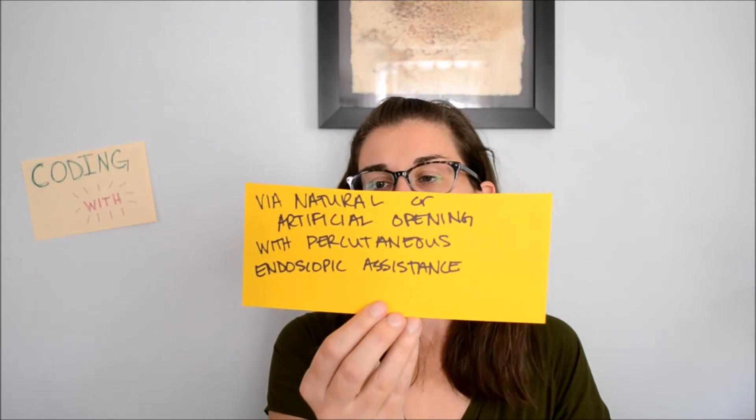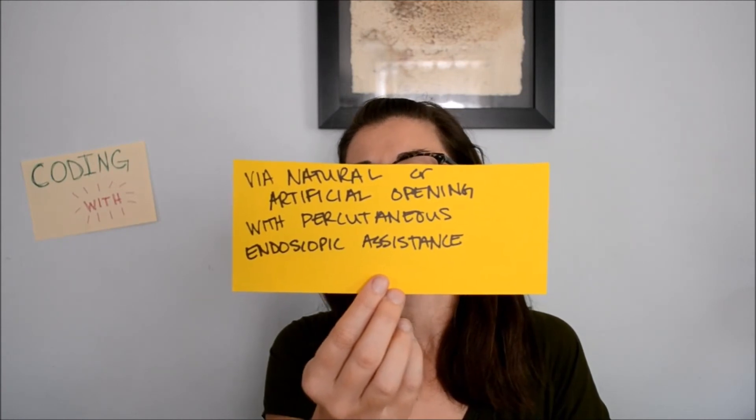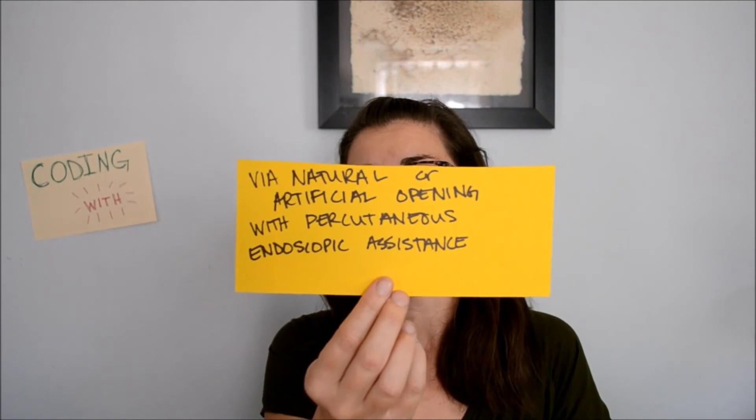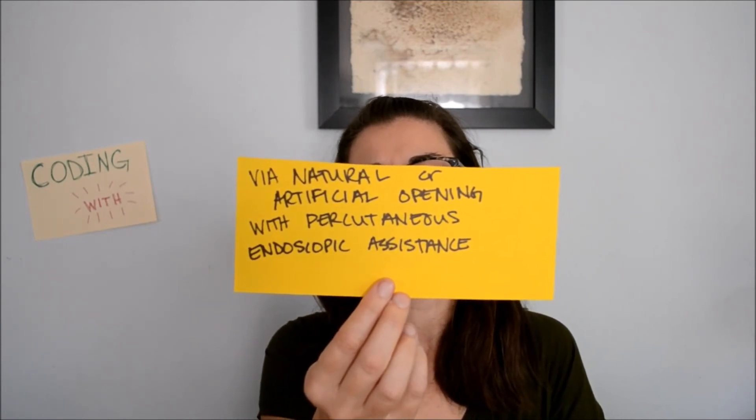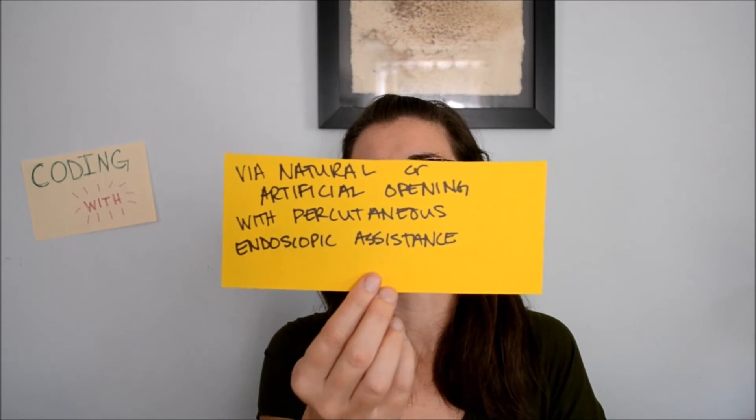And then we have via natural or artificial opening with percutaneous endoscopic assistance — entry of instrumentation through a natural or artificial external opening, and entry by puncture or minor incision of instrumentation through the skin or mucous membrane and any other body layers necessary to aid in the performance of the procedure. This one is actually really interesting. You won't come across it that often — it's not available in most of the tables within the body systems of the codebook. They are doing two separate entries: via natural or artificial opening, and a percutaneous entry through the skin. This gives them two separate angles of visualization while working on the body part.